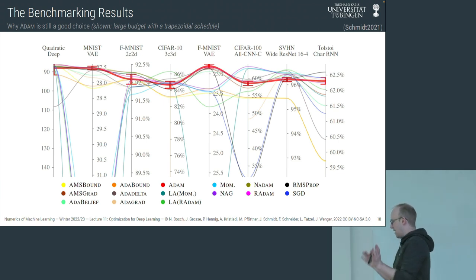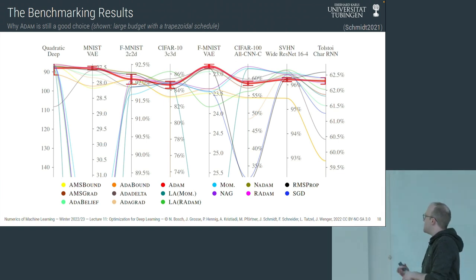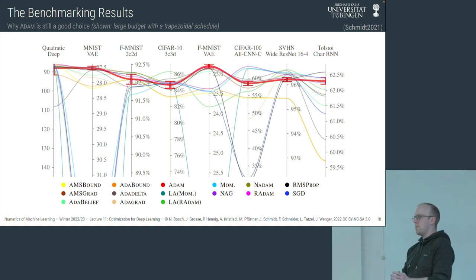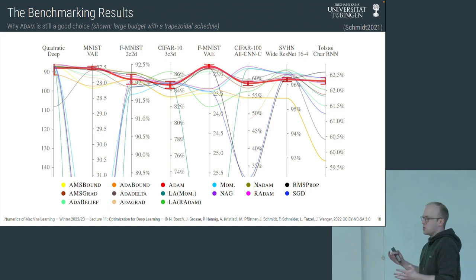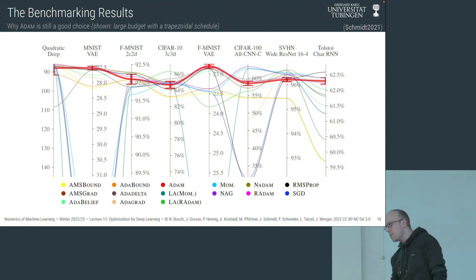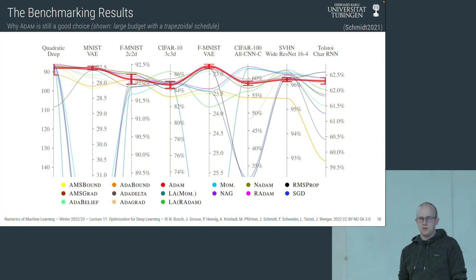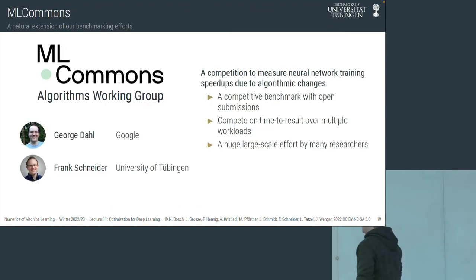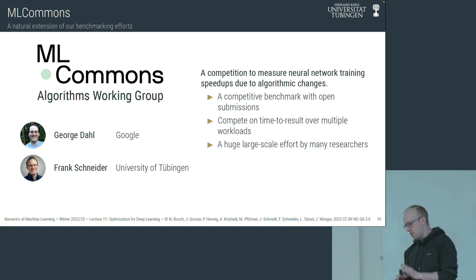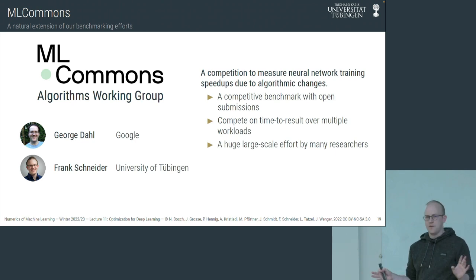What this entire benchmarking section tells us is that currently there is no clear state-of-the-art method for training neural networks. Lots of different methods exist, and which one is best depends on the problem, training time, and budget. In our benchmark, Adam looks quite good, but for large language models you may need something else, and for the character RNN, RMSProp is consistently better. We get a very messy picture — there's no clear recipe or protocol for training neural networks. Some criticisms of our limited benchmark are valid, but the fundamental issue remains.